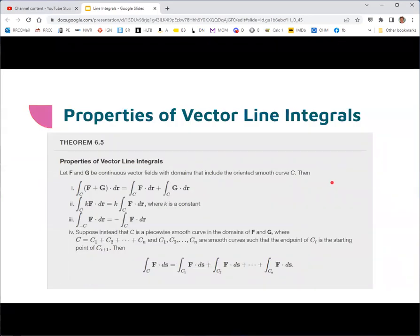There's a bunch of properties in theorem 6.5. You should look over the usual suspects. You can distribute integration over a sum of vector fields. You can factor off a constant that's multiplied by the vector field here. If you change the direction you move along the curve C, it gives you the opposite result. And then if you have the line integral over some C and you can break C up into a bunch of smaller pieces, then the line integral over those smaller pieces should add up to the total line integral. And this is good for complicated shapes like polygons where we can parameterize the individual straight length segments and then add up the total.